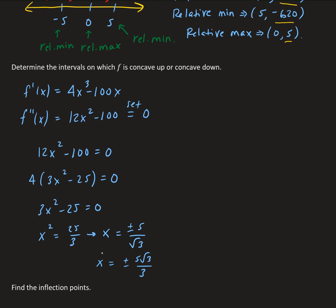Solving for x, we get x squared equals 25/3, so x equals plus or minus 5 over root 3. Rationalizing, this is plus or minus 5 root 3 over 3. We then plot these on the number line.